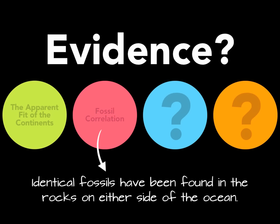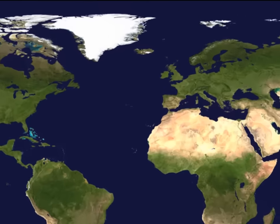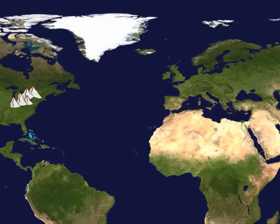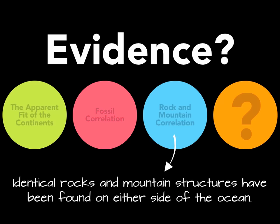But Wegener knew he needed a stronger case. So he went back to the library and became fascinated by rocks and geologic structures like mountain ranges of the past. He found a really interesting pattern: if you look at the mountain ranges in the northeastern United States and the mountain ranges in northern Europe, they match up perfectly — they are made of the same type and age of rock. A better explanation than coincidence is that these mountains were once connected, and as the continents moved, they were torn in two. That's evidence number three: rock and mountain correlation — identical rocks and mountain structures found on either side of the ocean, suggesting the continents were once connected.